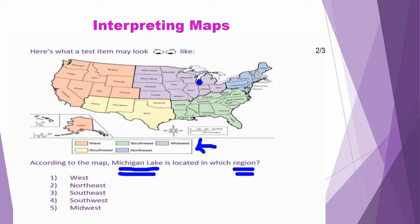We see that Michigan Lake is located here. Once we have found Michigan Lake, we now want to take note of what region it is located in. We see that it is the purple region, and according to our map key, the purple region is the Midwest. So now we know that Michigan Lake is located in the Midwest, and option number five is the correct choice.